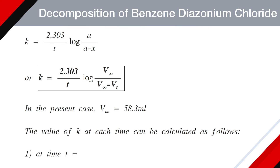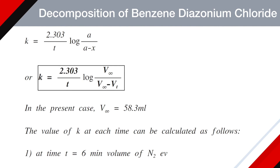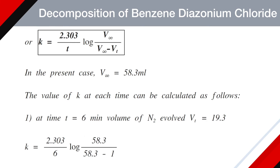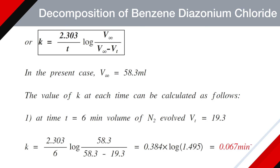At time T equals 6 minutes, the volume of nitrogen gas collected is Vt = 19.3 mL. So K becomes 2.303 divided by 6, log of 58.3 divided by (58.3 minus 19.3), which is 0.384 × log(1.495), and finally K = 0.067 min⁻¹.